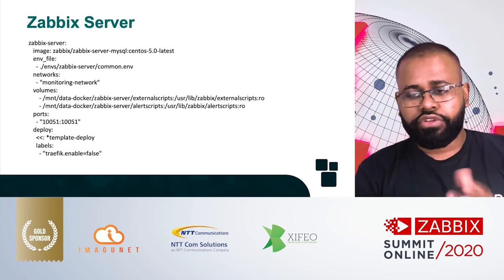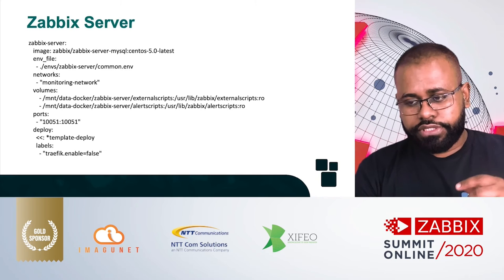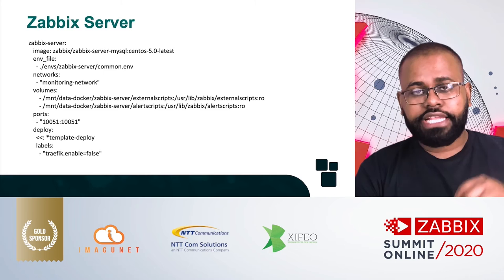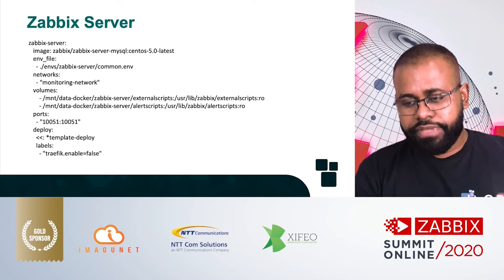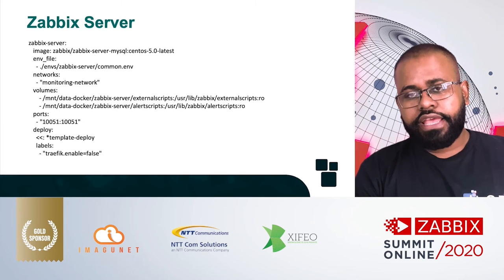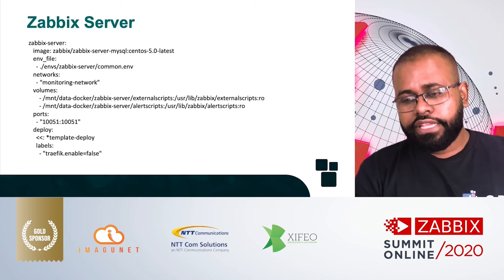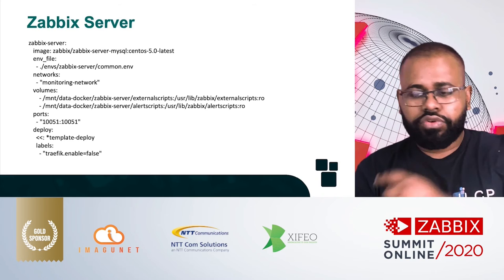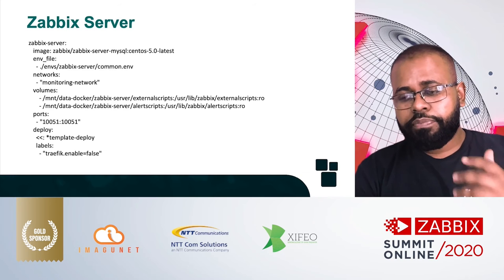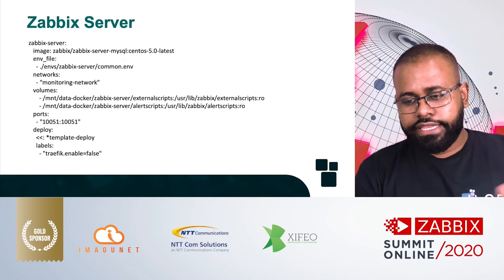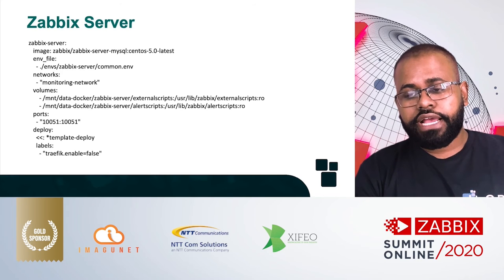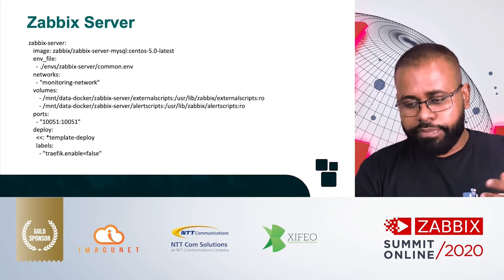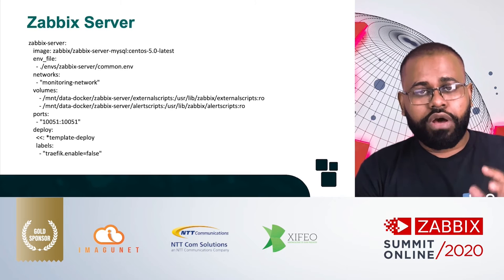We use a monitoring network and two volumes for storing external scripts and alert scripts. These scripts must be stored on the NFS server, which shares the directory, and on the Docker host, we mount this share to the container. We also define which port the Zabbix server is listening on — in this case, a redirect from host port to container port. We can use a YAML anchor to define deploy templates, and in labels, we set traefik.enable to false, since the Zabbix server does not need a Traefik route.